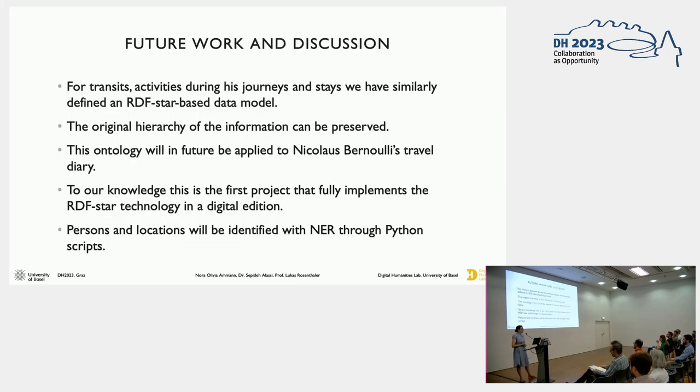So for transit locations, these are the locations he passed on his journeys but did not stop at. We similarly created RDF star triples. And also for activities such as dinners and lectures as well. So with RDF star, we are able to preserve the original hierarchy of the information, which we would not be able to with regular RDF even if we used reification.